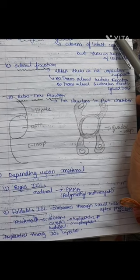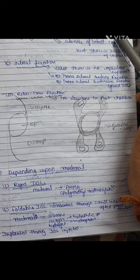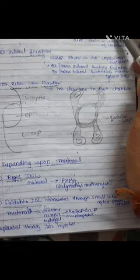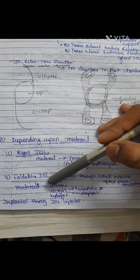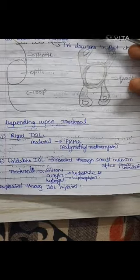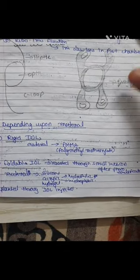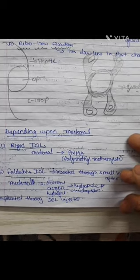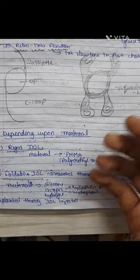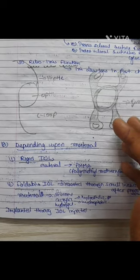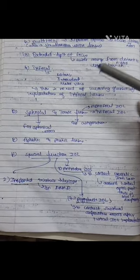Retro-iris fixation uses iris claw lenses placed in the posterior chamber. We previously studied iris-supported intraocular lenses using iris claw lenses; when those same iris claw lenses are used in the posterior chamber, it is called retro-iris fixation. The second classification is based on material: rigid intraocular lenses made of PMMA (polymethyl methacrylate) and foldable intraocular lenses inserted through a small incision after phacoemulsification.